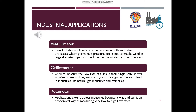Let us talk about the industrial applications of flow measuring devices. Venturimeters are used for gas, liquids, slurries, suspended oils, and other processes where permanent pressure loss is not tolerable. They are also used in large diameter pipes such as those in wastewater treatment. Orifice meters are used to measure flow rates of fluids in single and mixed states such as wet steam or natural gas with water, and are common in natural gas industries and refineries. Rotameters are widely used across industries as an economical way of measuring very low to high flow rates.